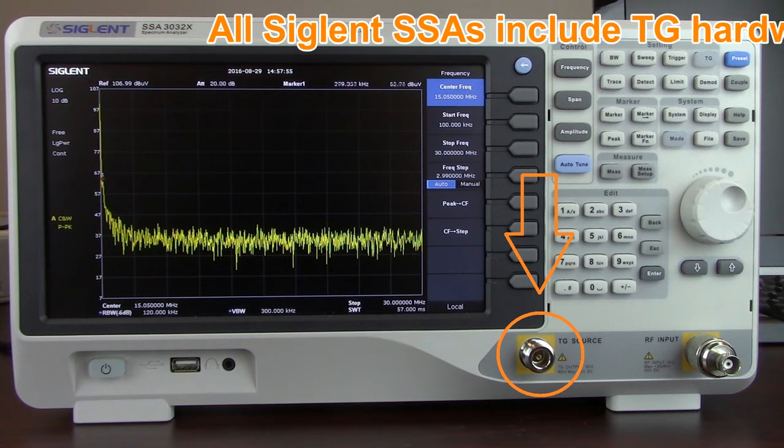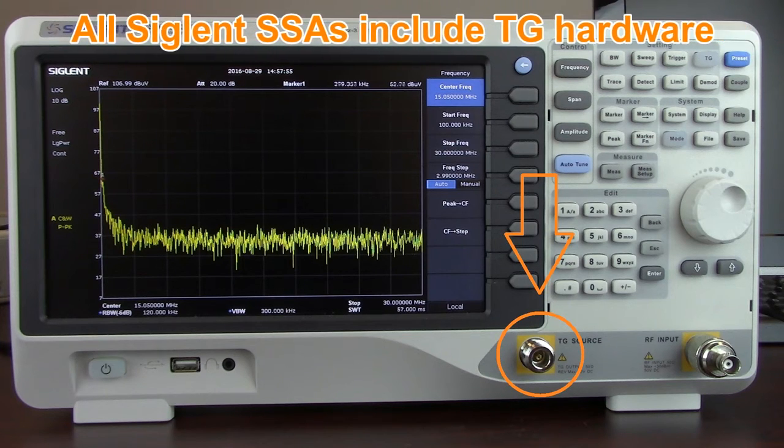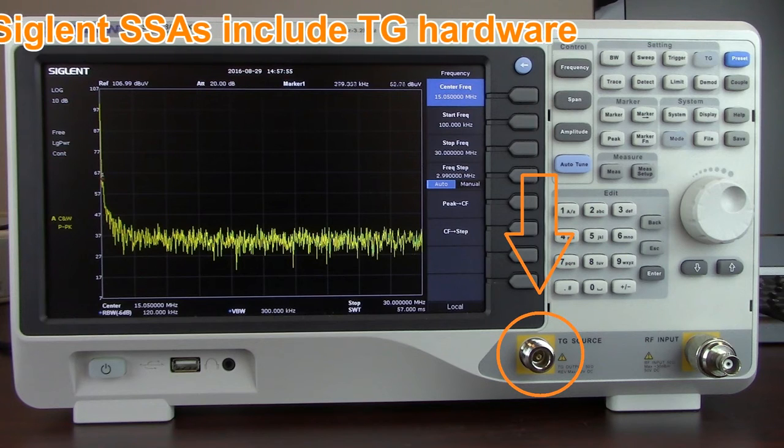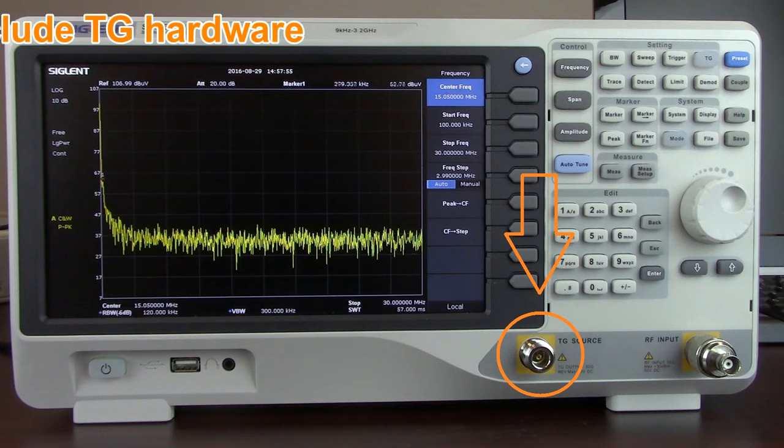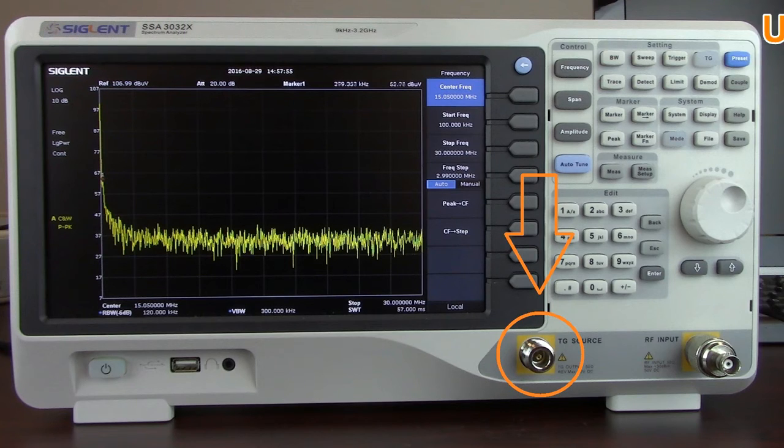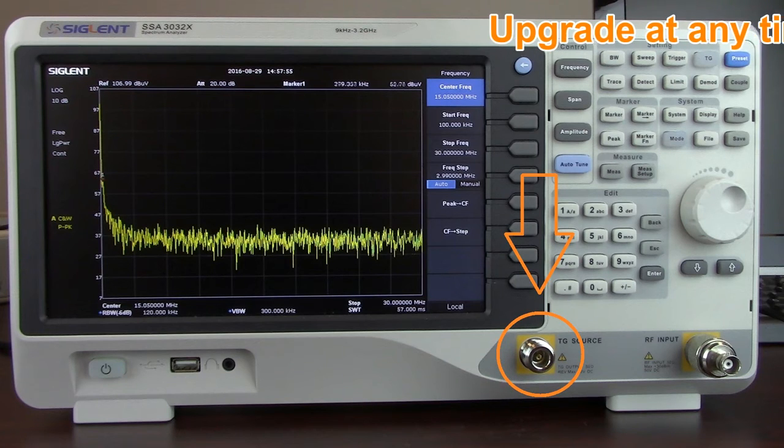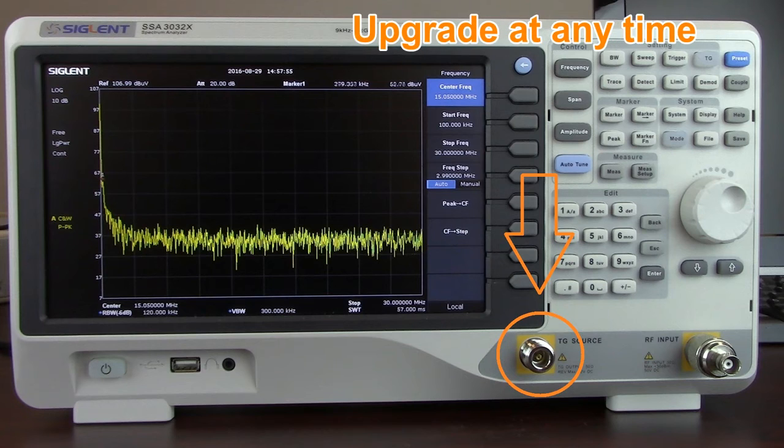It's included. If you don't want the feature, you don't have to buy the license and you don't have to activate it. If you do purchase a unit without the TG option enabled, your upgrade is available at any time. To activate the TG option on the Siglent SSA 3000X, all you have to do is call your nearest Siglent office or distributor, purchase the option, and enter the license key.